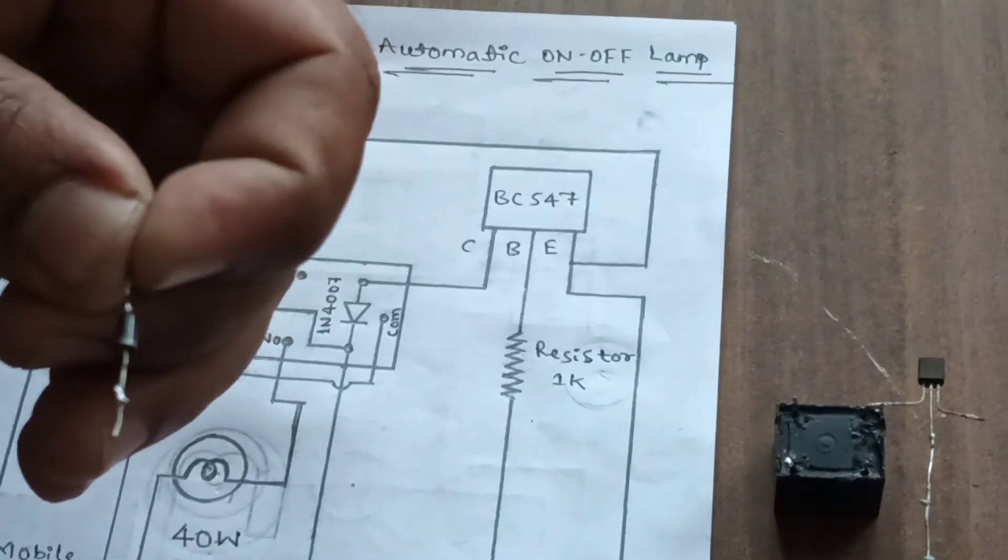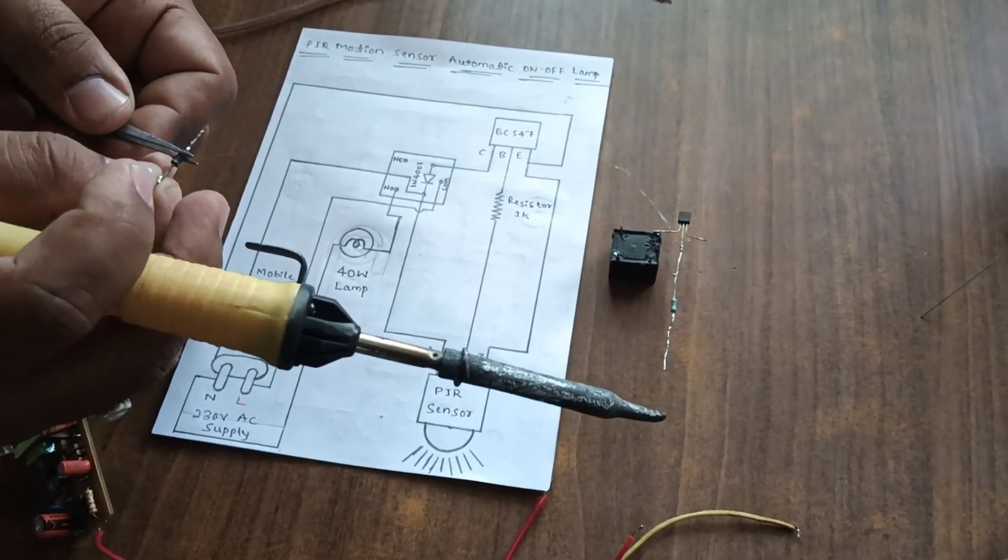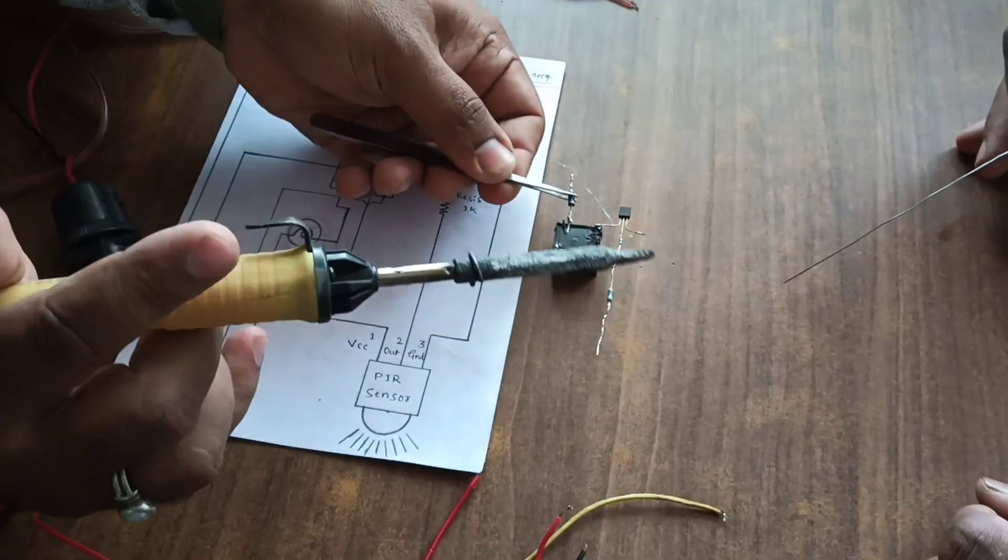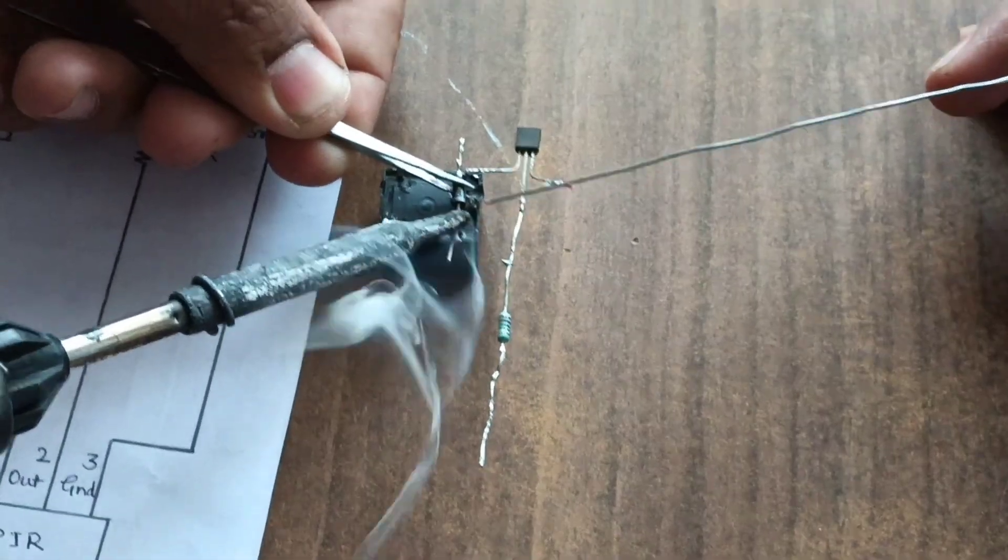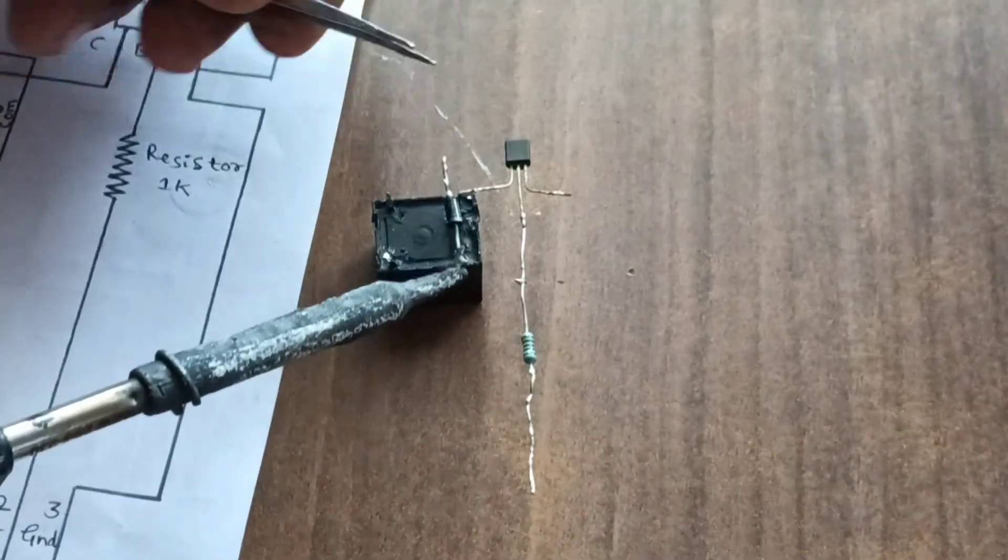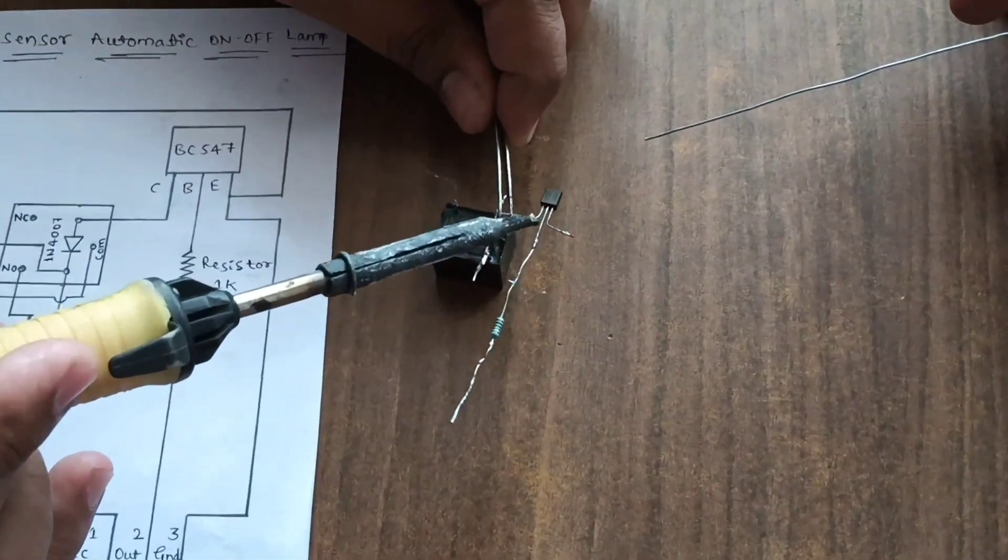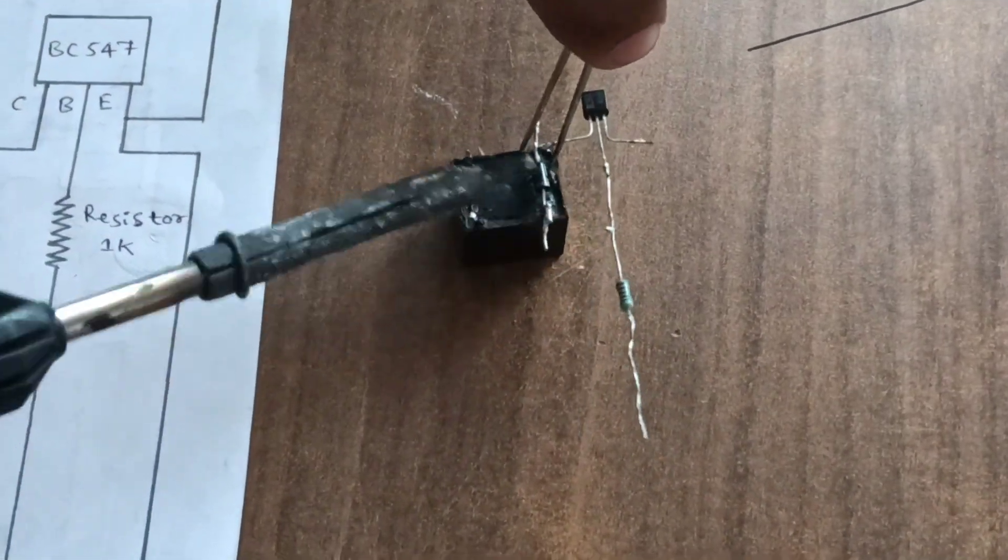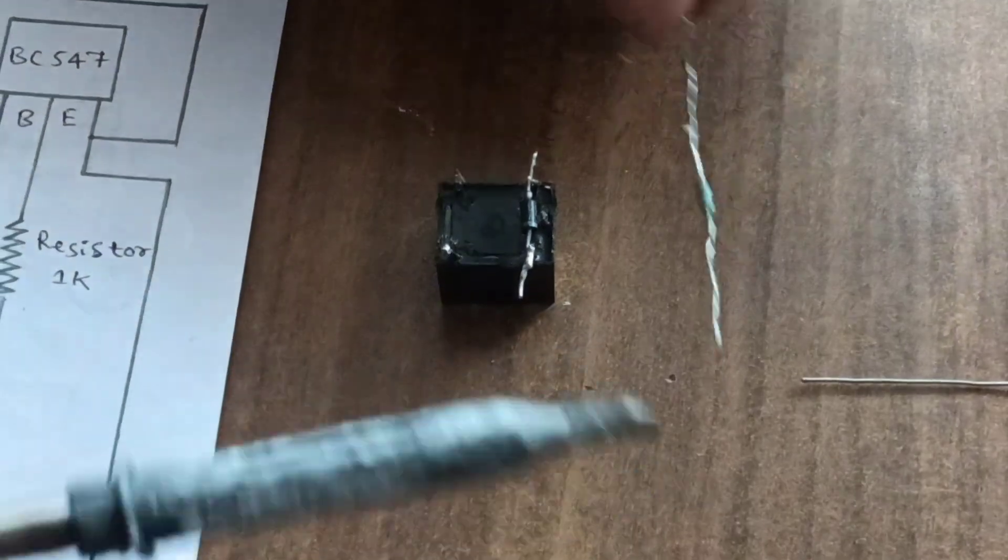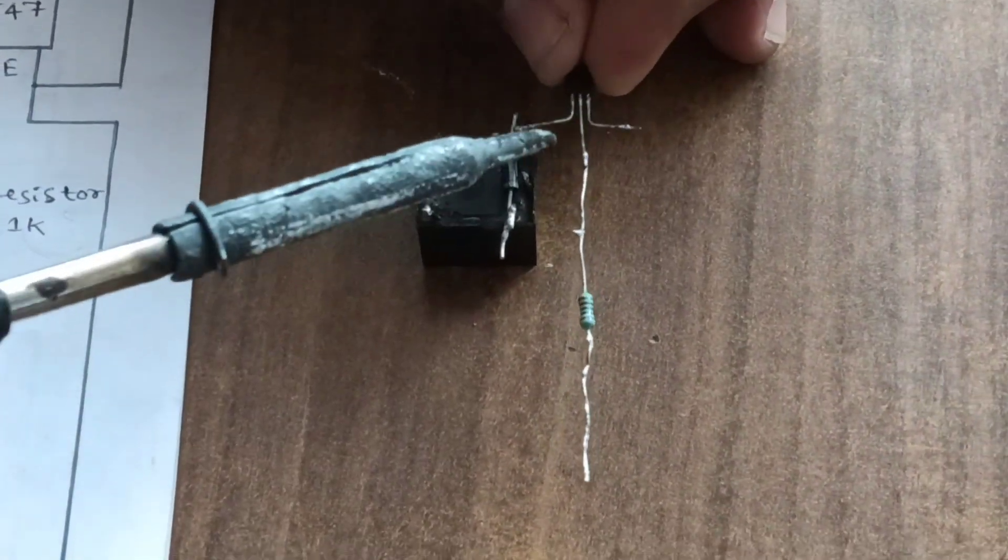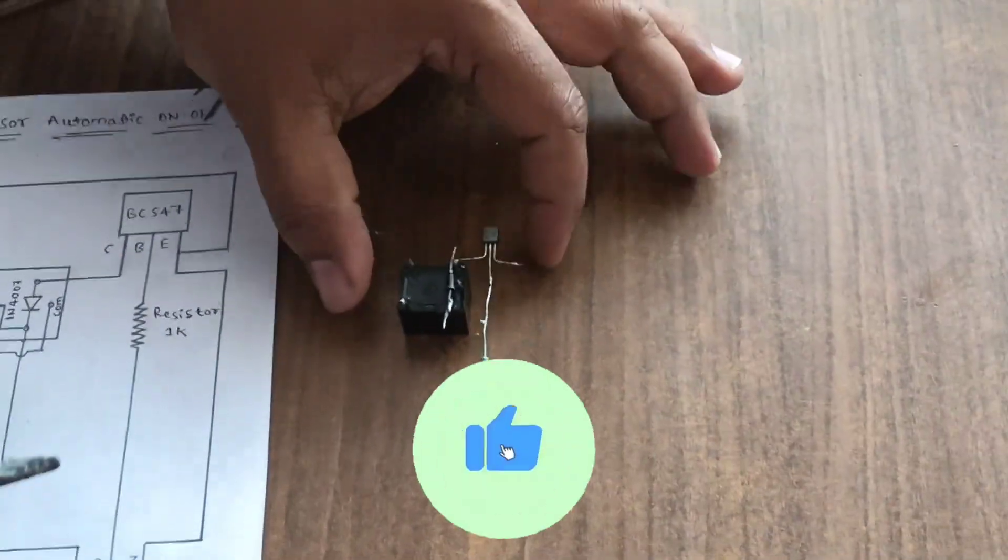The diode has anode and silver ring is cathode. We connect in this position. Diode, connect anode, and this is cathode.